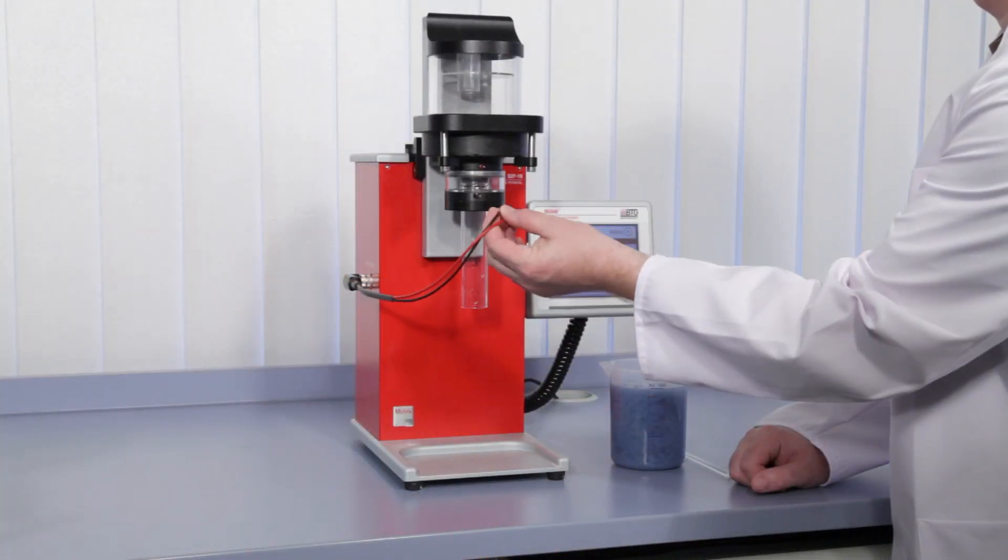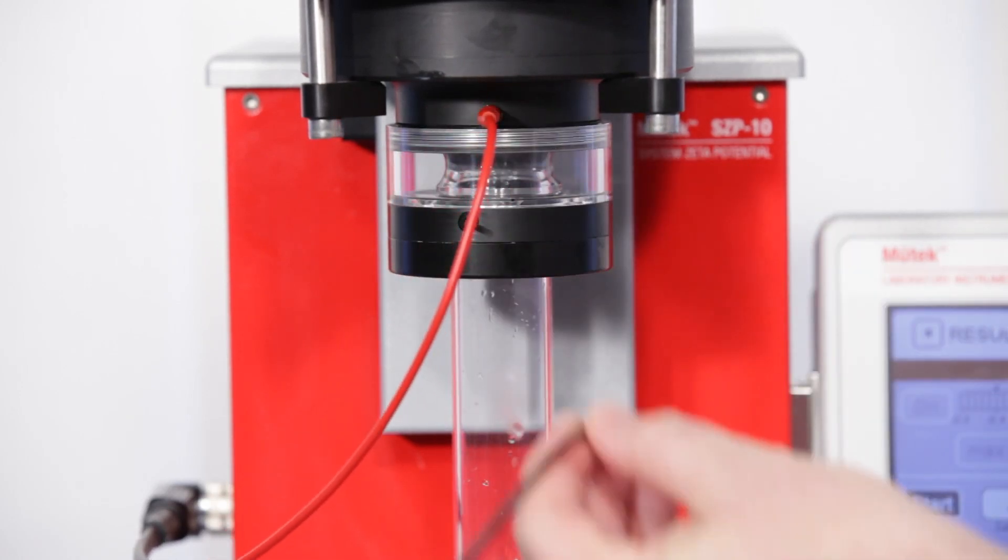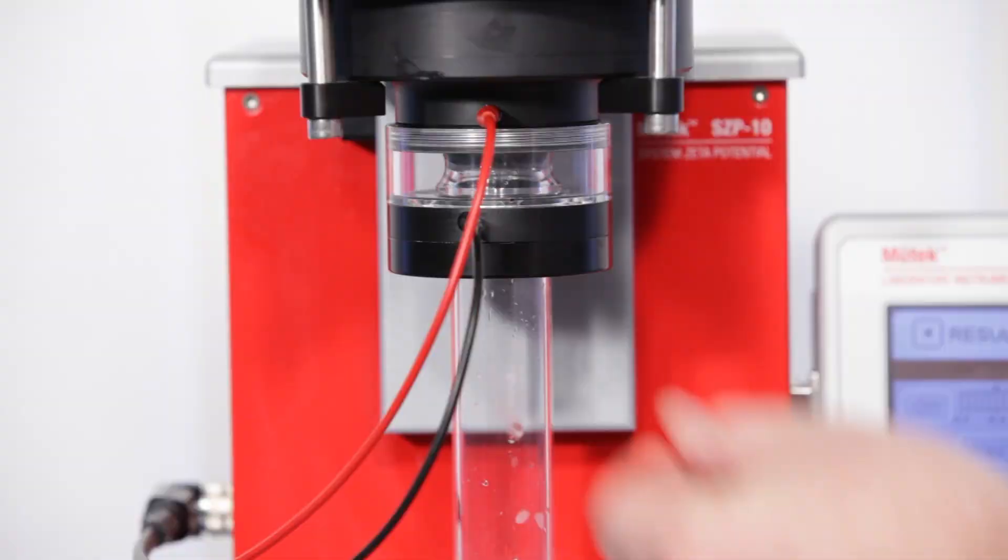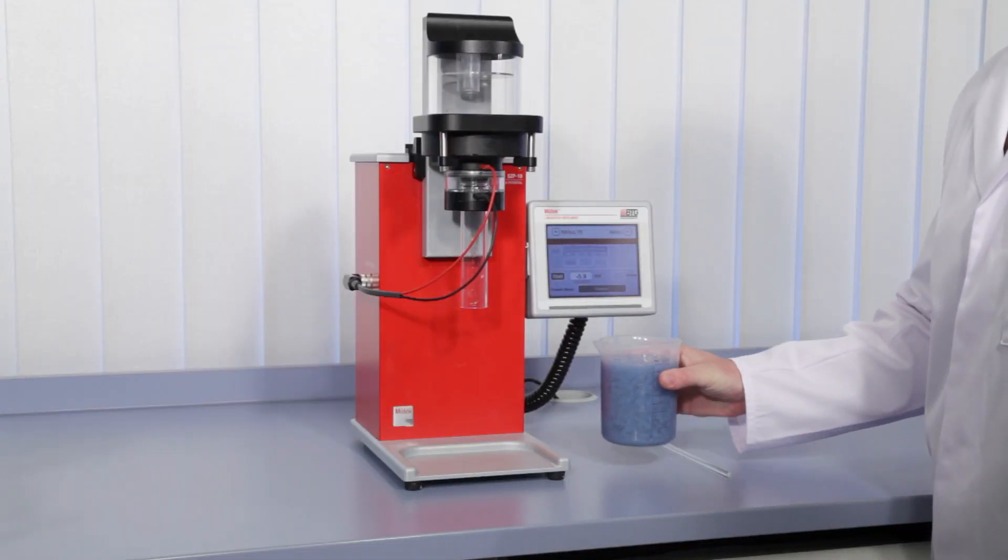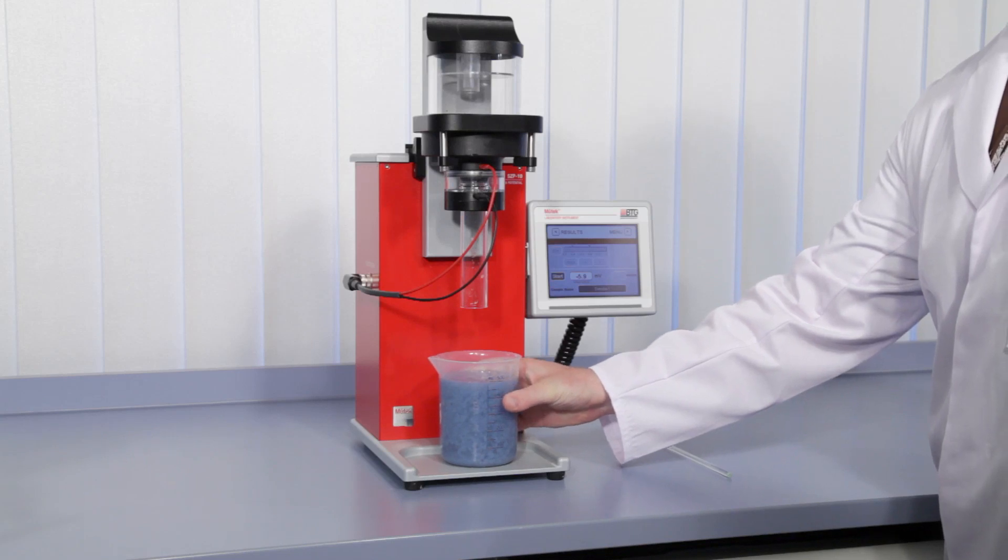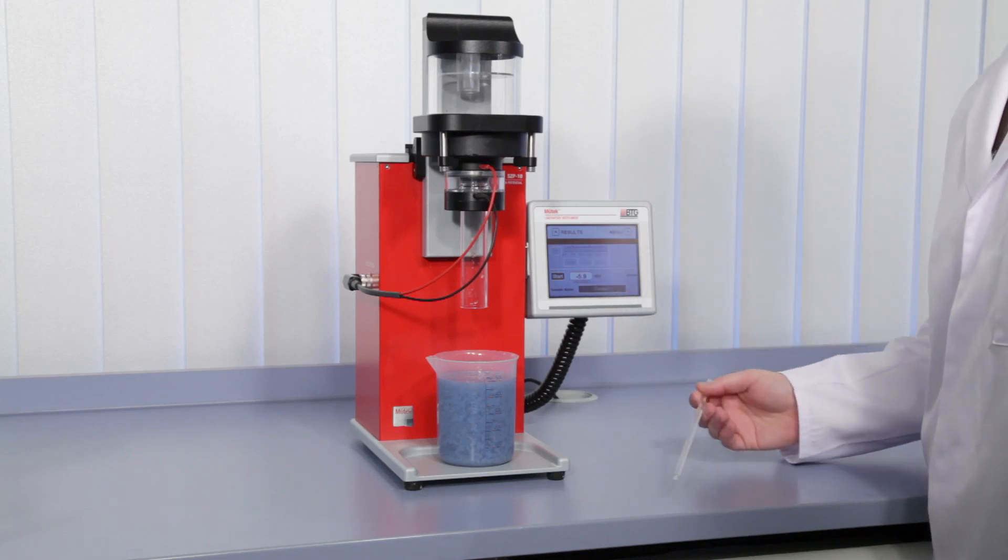Connect the electrode cable to the electrodes, red to red and black to black. Similar to the conductivity measurement before, place the beaker with a 500 milliliter sample on the SZP platform. Make sure that the sample is properly homogenized.